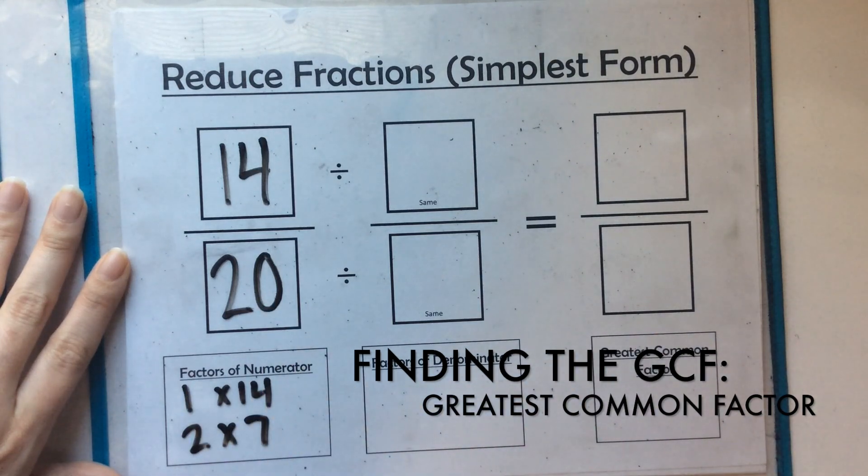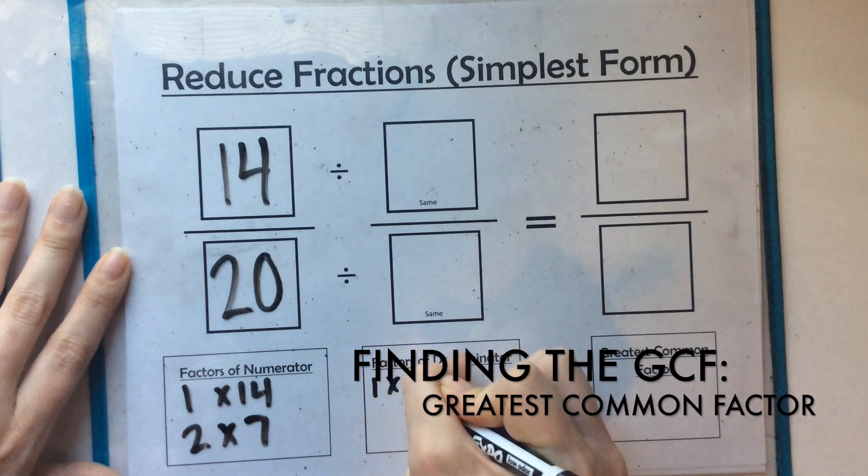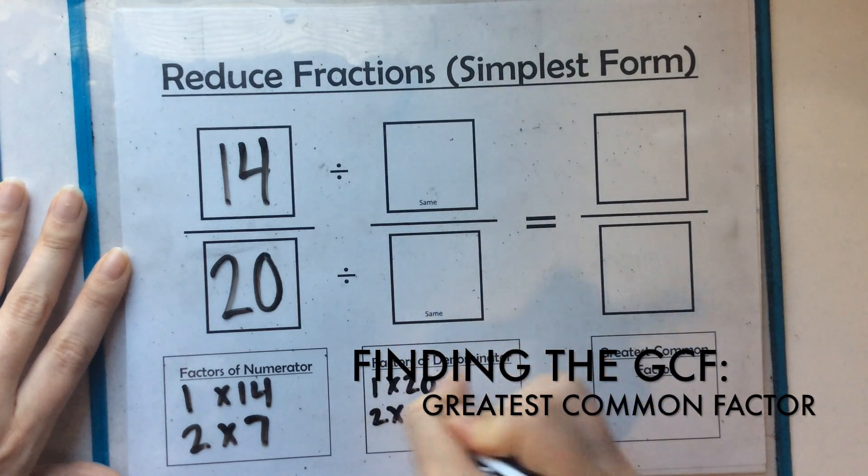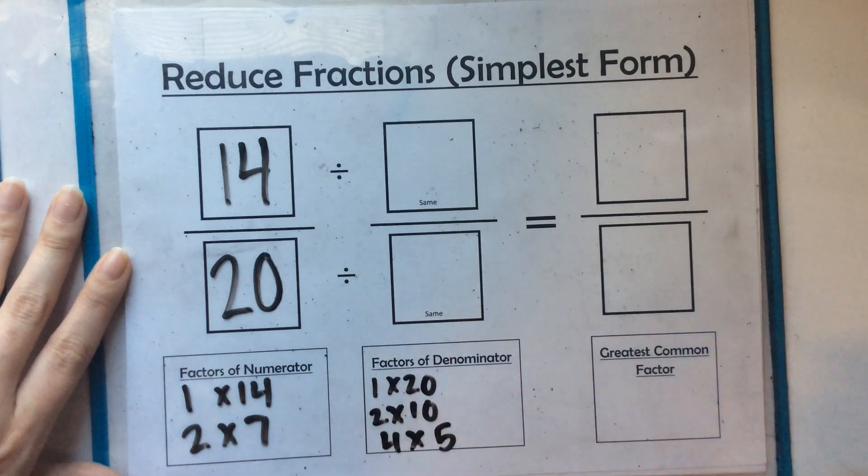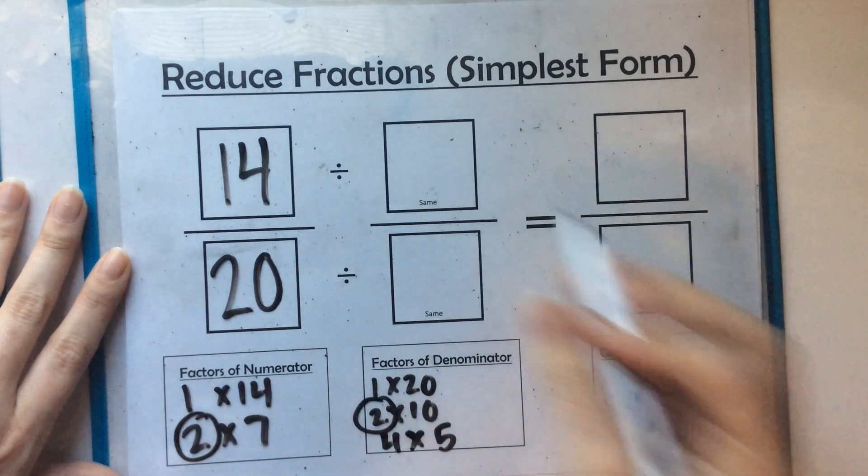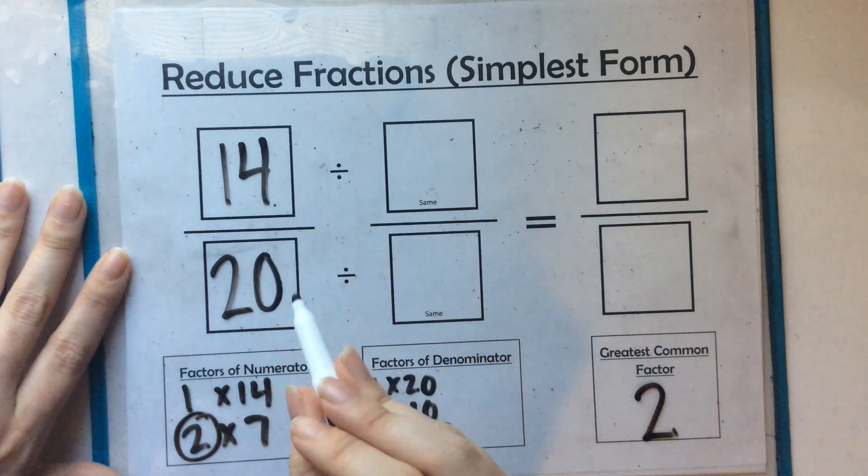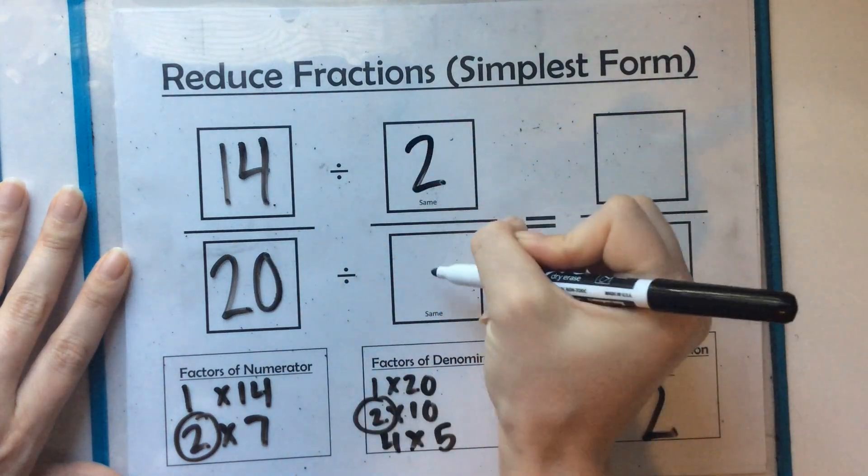Factors of 20, there's a lot more factors of 20. There's 1 times 20, 2 times 10, and 4 times 5. So the greatest common factor I see here is 2. So we need to divide both the numerator and the denominator by 2.